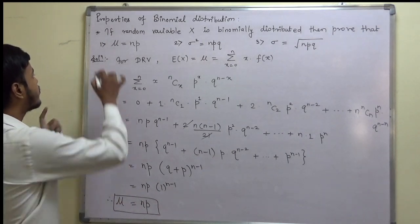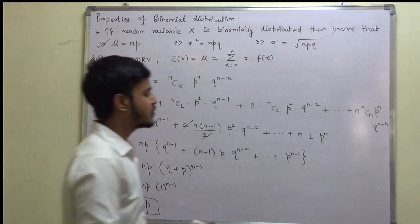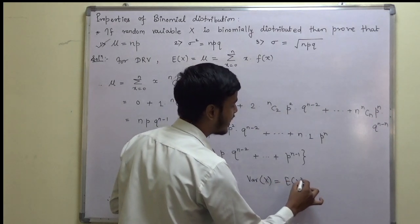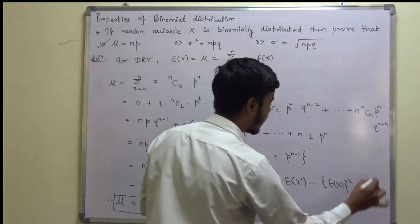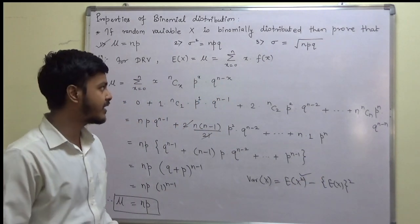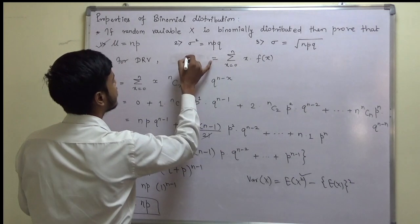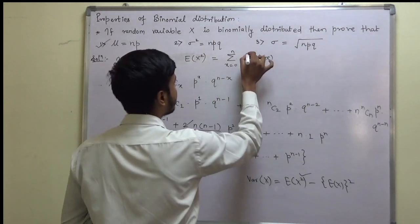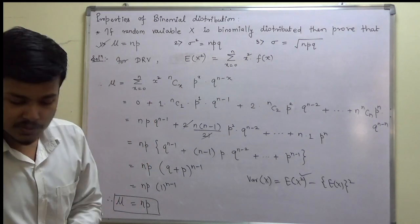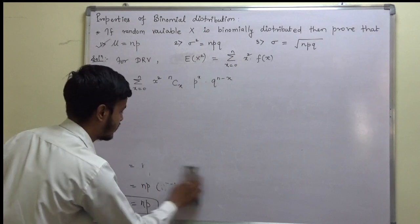This completes the proof of the first property. Now we are going to prove the second property, that variance equals npq. If you remember, variance of x is: E(X²) − [E(X)]². We have the expectation of x that we just found out. Now we have to find out E(X²), which can be found out by the summation of x²·f(x).